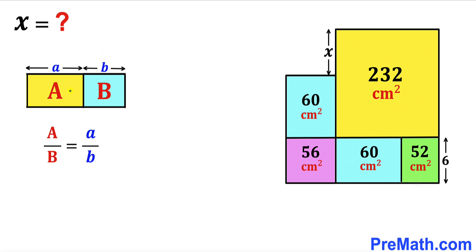Here we got these two rectangles. The area of this yellow rectangle is A. The area of this blue rectangle is B along with their respective side lengths a and b respectively. Then the ratio of their area is going to be equal to the ratio of their side length.